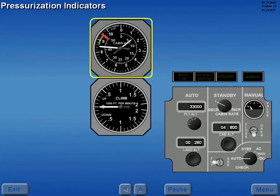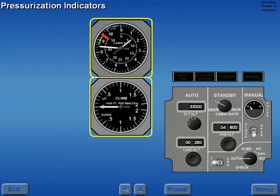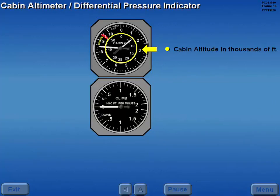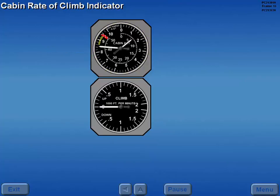The cabin altimeter, differential pressure, and cabin rate of climb indicators are used to monitor pressurization operation. The inner scale of the cabin altimeter differential pressure indicator represents cabin altitude in thousands of feet, and the outer scale represents PSID. The cabin rate of climb up or down is indicated in thousands of feet per minute.